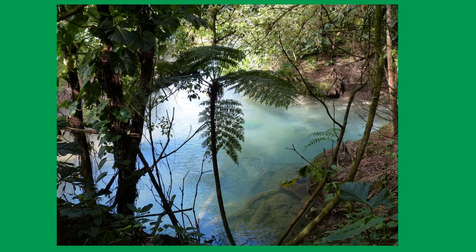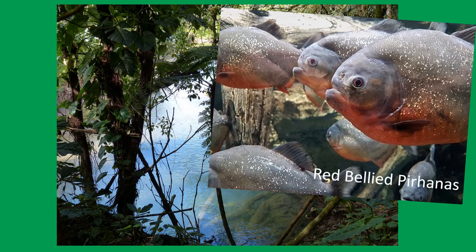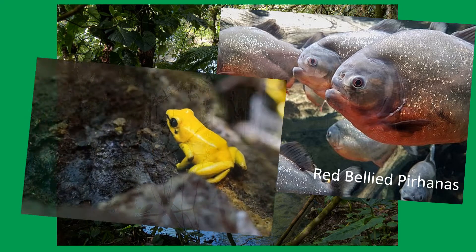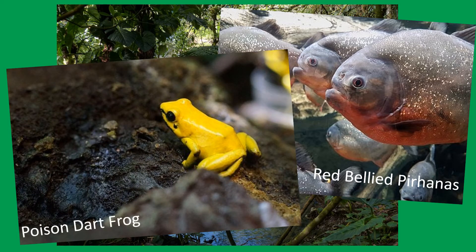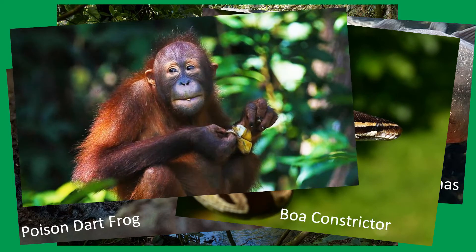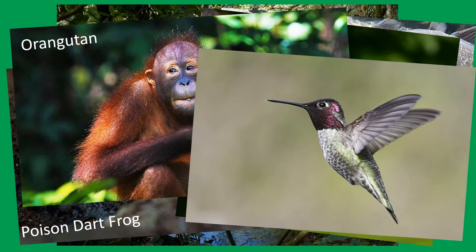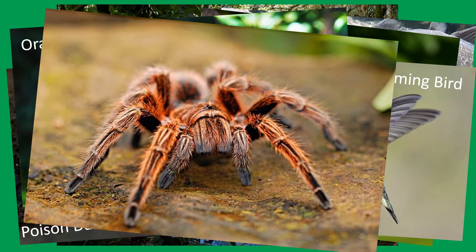This rainforest is home to many different animals including a number of fish like the red-bellied piranha, amphibians like the poison dart frog, reptiles like the boa constrictor, mammals like the orangutan, a variety of birds including hummingbirds, and a number of insects and mini-beasts like the tarantula.